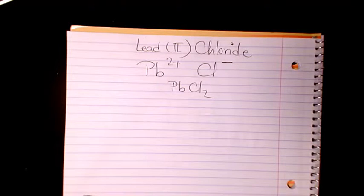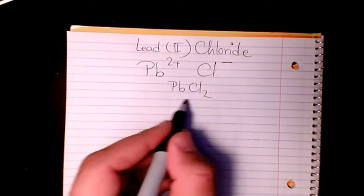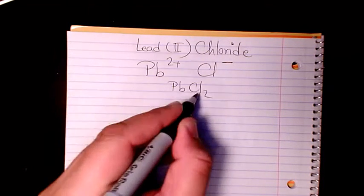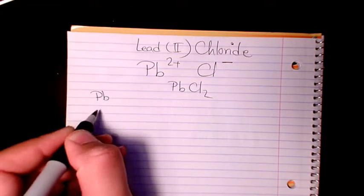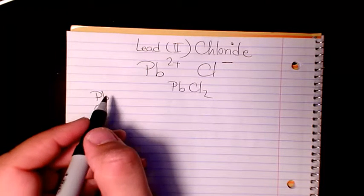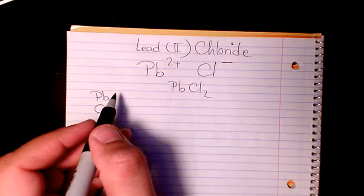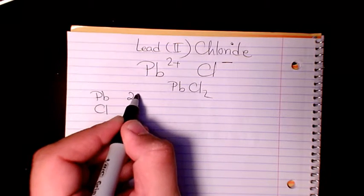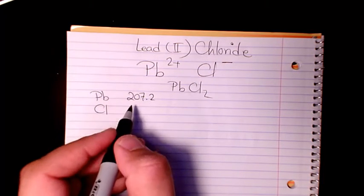Now I want to find out the molar mass or molecular weight of this compound. First of all, I list the elements we have. We have just Pb and also Cl chlorine. Pb, which is lead, is 207.2, and chlorine is 35.45.